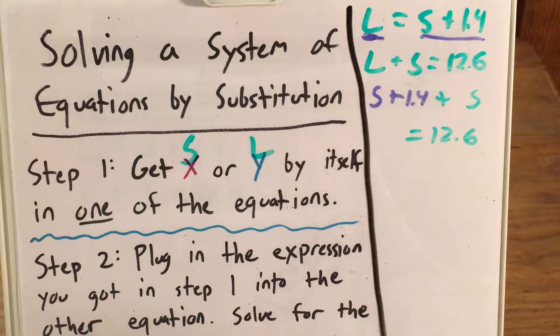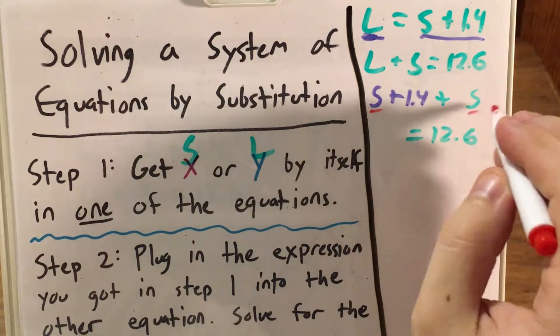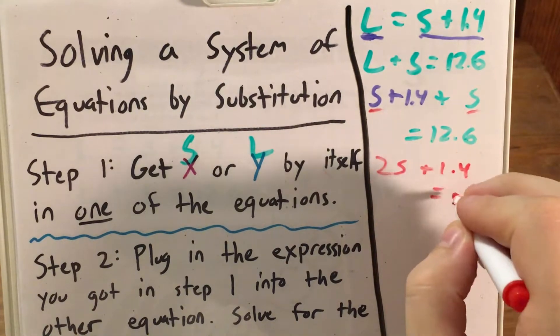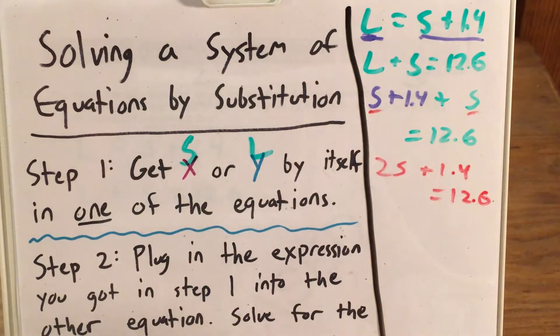So now we go ahead and solve for S. S plus 1.4 plus S, I can already see that I have to combine my like terms. Because I'm essentially saying now that two small dogs plus 1.4 equals 12.6.